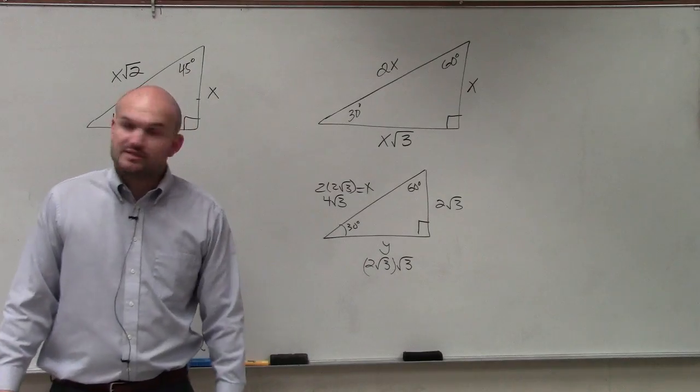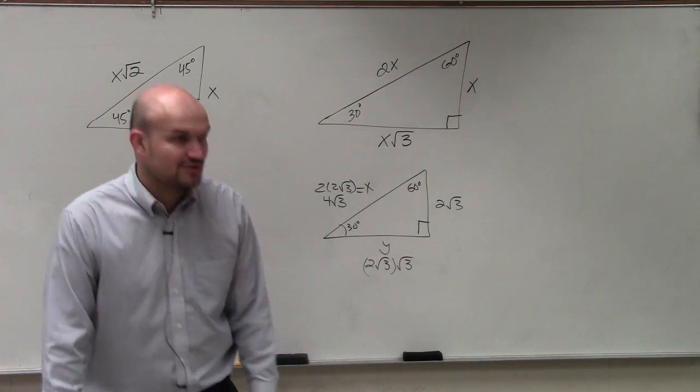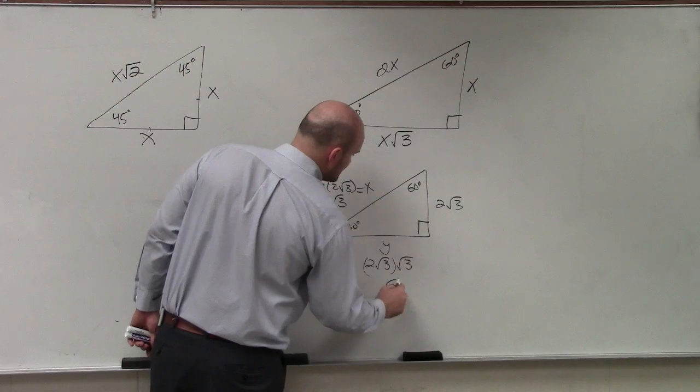Well, √3 times √3 is (√3)², which is just going to be 3. 2 times 3 is 6.